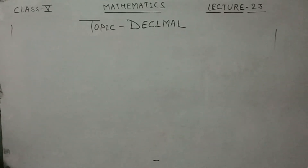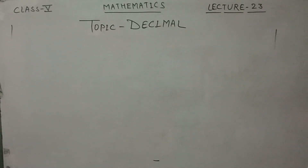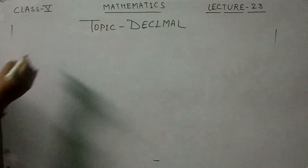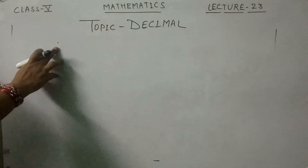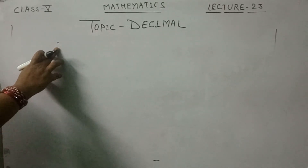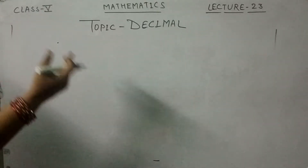Today's topic is decimal. First I want to explain what a decimal is. A decimal is a number expressed in the scale of tens. The decimal point is a point or dot used to separate the whole part of a number from the fractional part of a number.